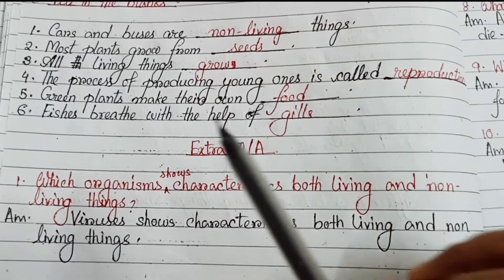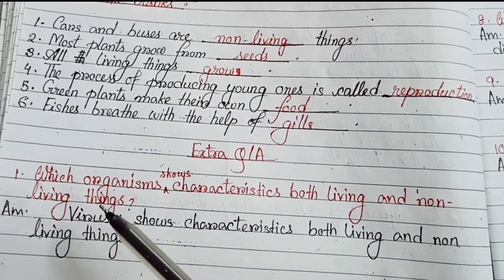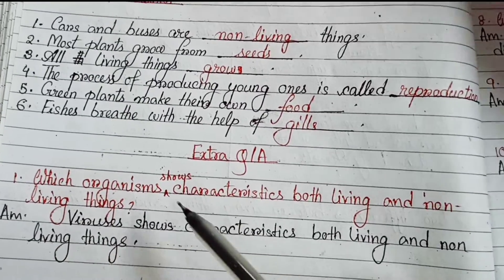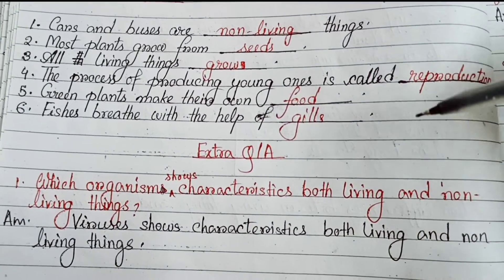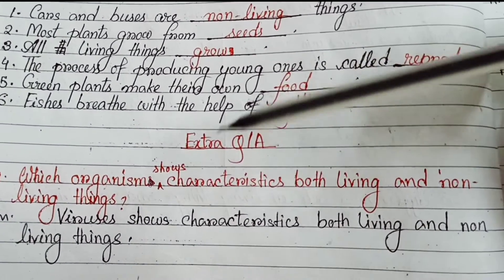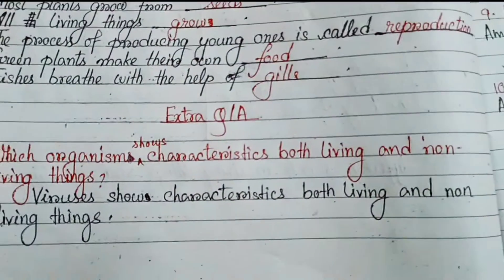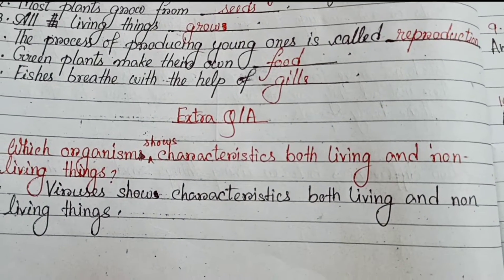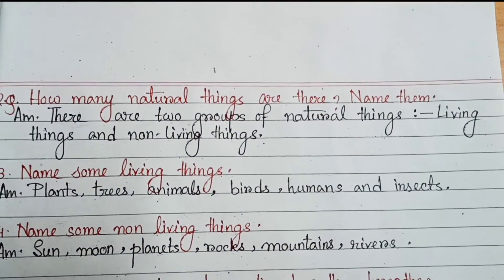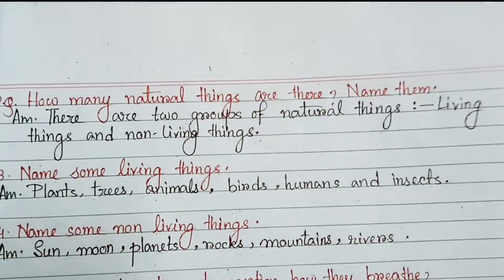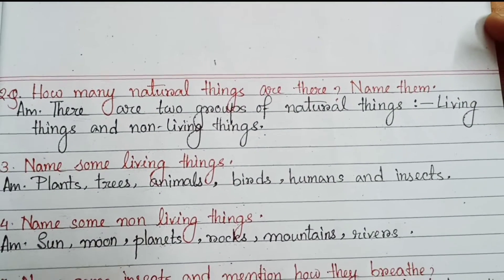Extra question answer. Number 1 - Which organism shows characteristics of both living and non-living things? Viruses show characteristics of both living and non-living things. Number 2 - How many groups of natural things are there? Name them. There are two groups of natural things: living things and non-living things.